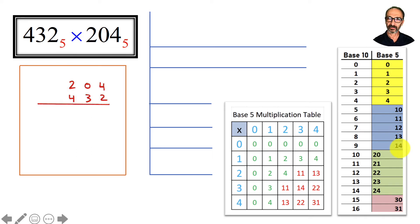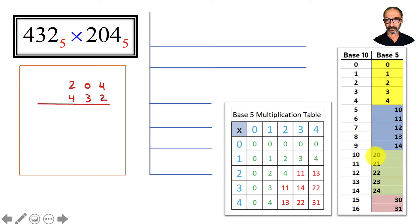4 is the highest number, so adding 1 to it forces it to 0 and we add 1 on a new place value to the left. For example, 14 in base 5: add 1 to 4 — it's filled, so make the 4 a 0 and add 1 to the left, which takes 1 and makes it 2. So counting in base 5 will help a lot, and so will the multiplication table.